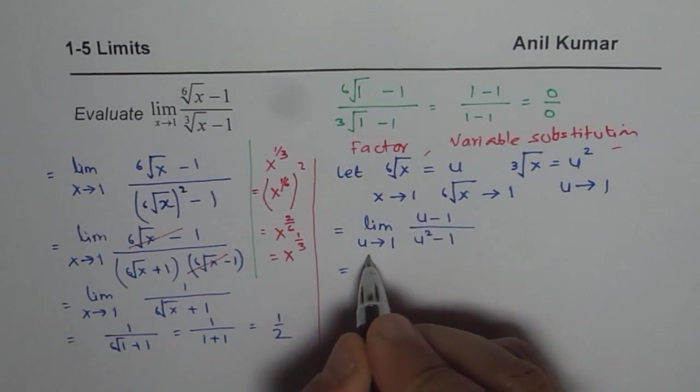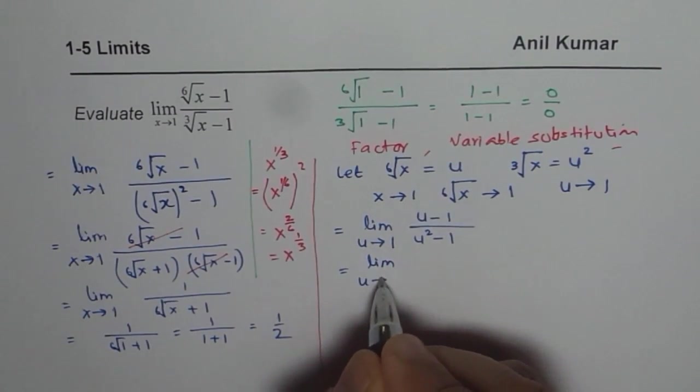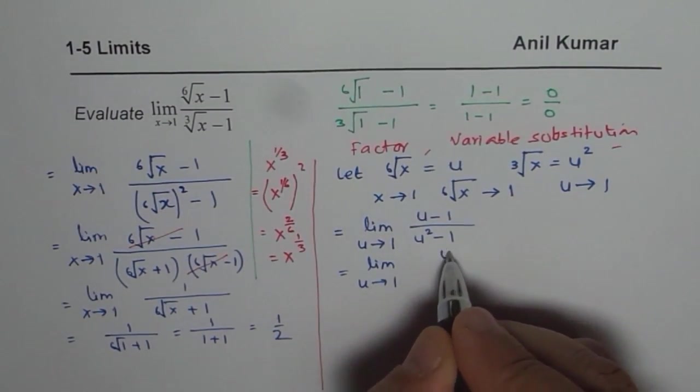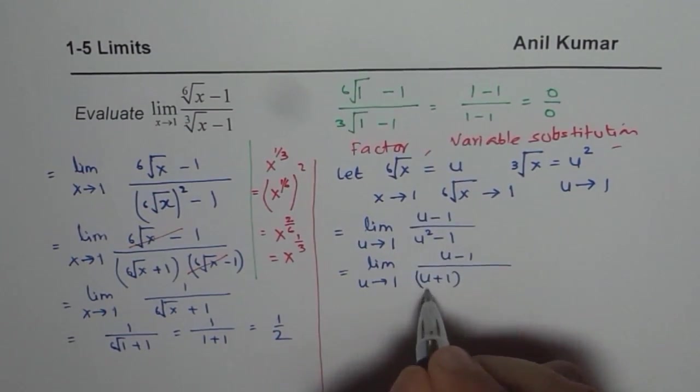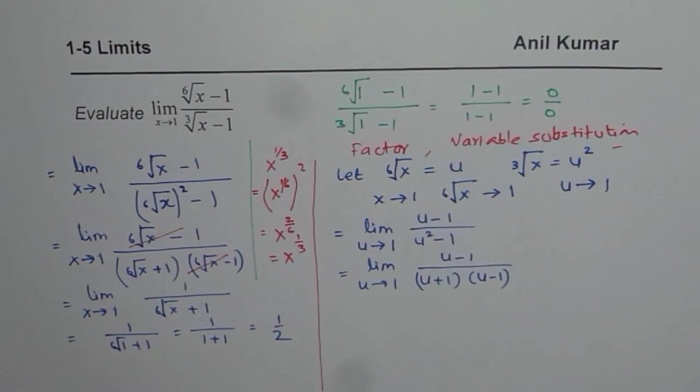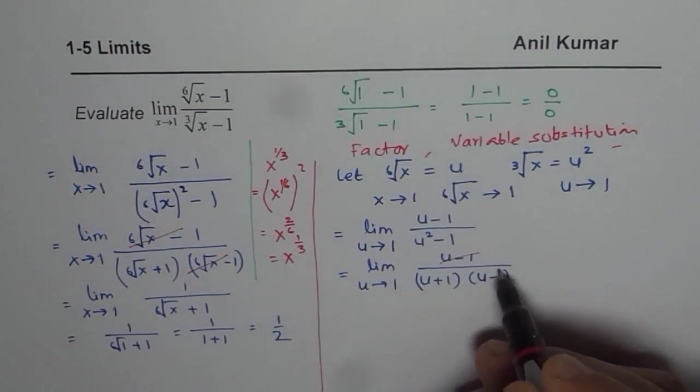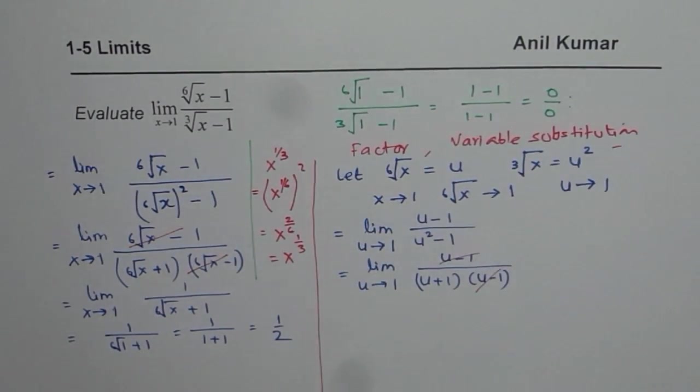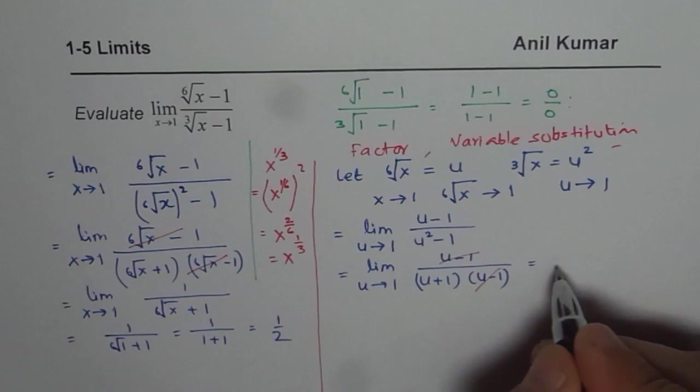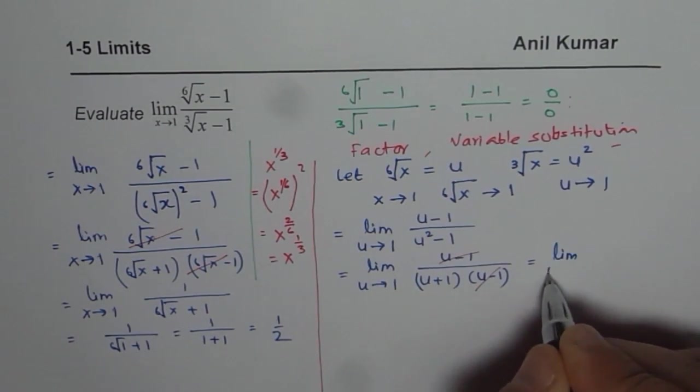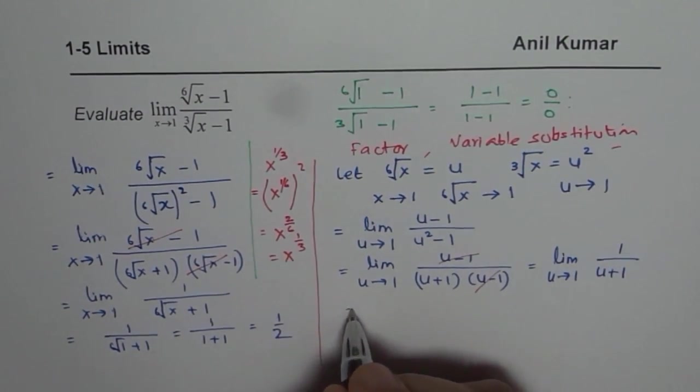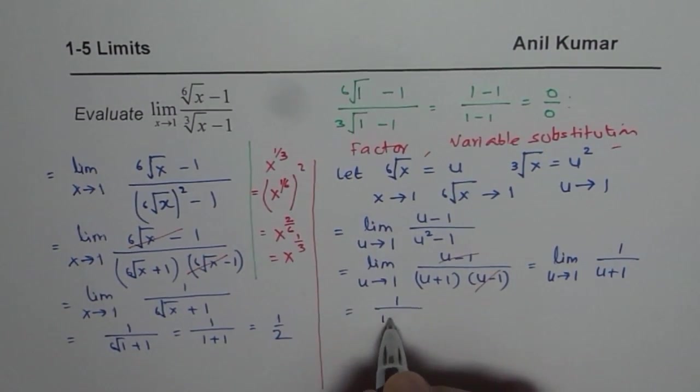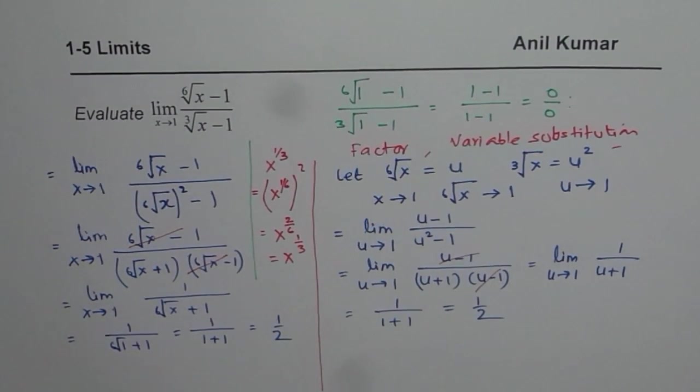Now you could factor u approaches 1, u minus 1 in the numerator and in denominator u plus 1 times u minus 1. So now we can cancel out the common factor which causes this, right? So what we get here is limit u approaches 1, 1 over u plus 1. Now substitute 1 for u, so we get 1 over 1 plus 1 which is same, half, correct? So you get exactly the same answer.